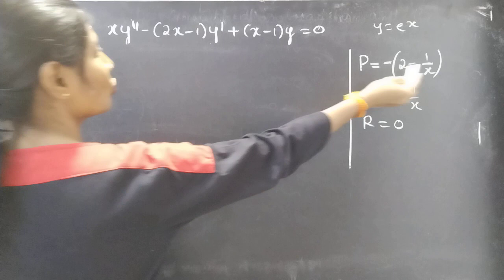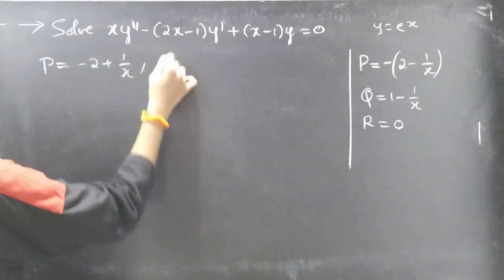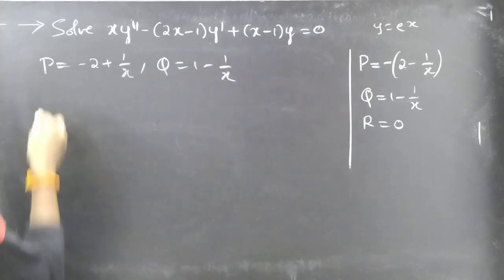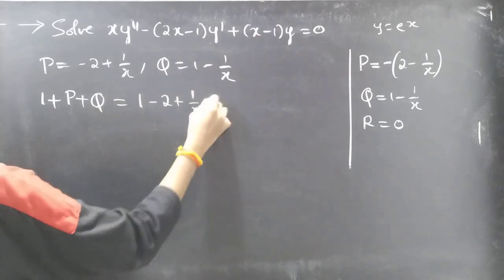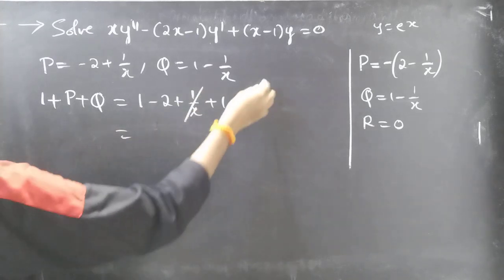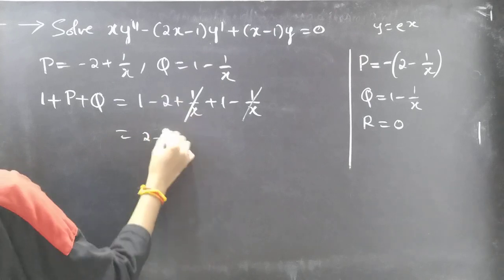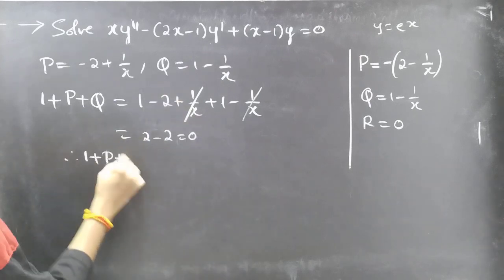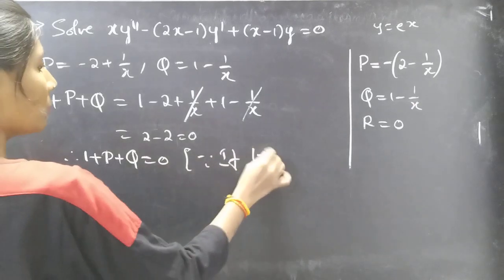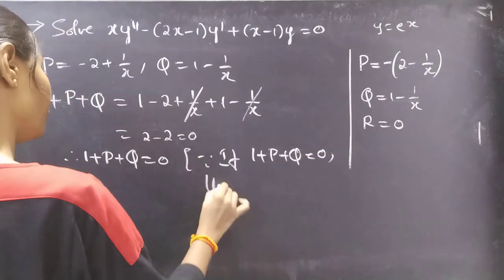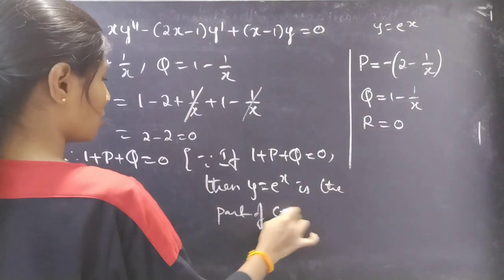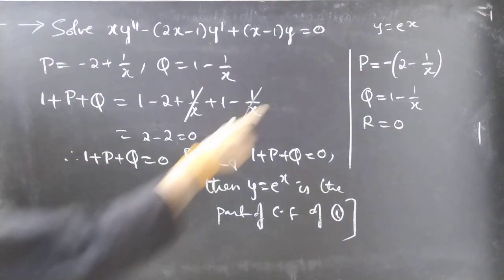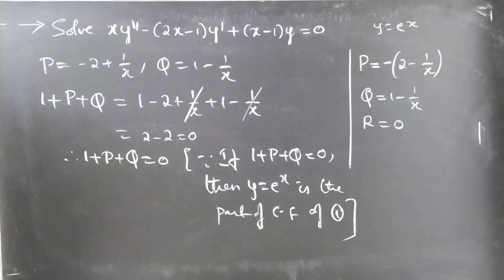We have P = −2 + 1/x and Q = 1 − 1/x. Now apply the inspection method: check 1 + P + Q = 1 + (−2 + 1/x) + (1 − 1/x) = 1 − 2 + 1 + 1/x − 1/x = 0. Since 1 + P + Q = 0, we confirm that y = e^x is a part of the complementary function, which matches the given one integral part.